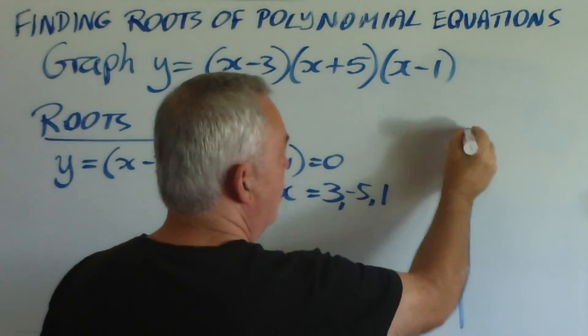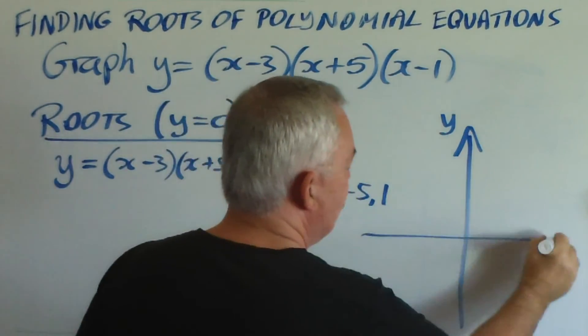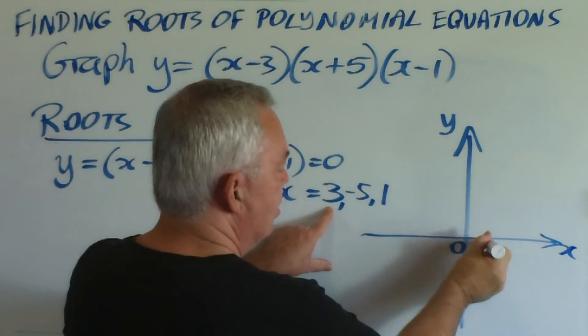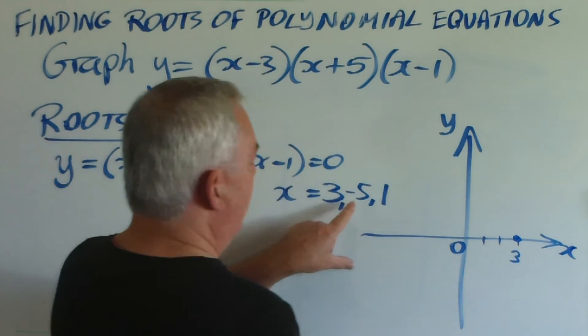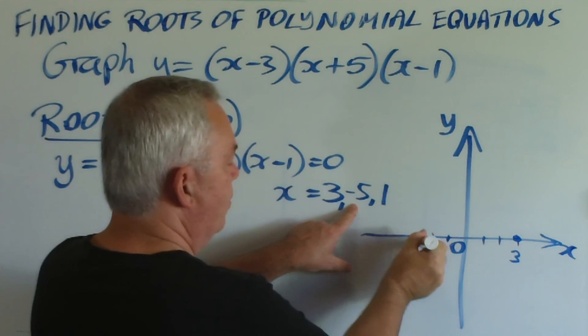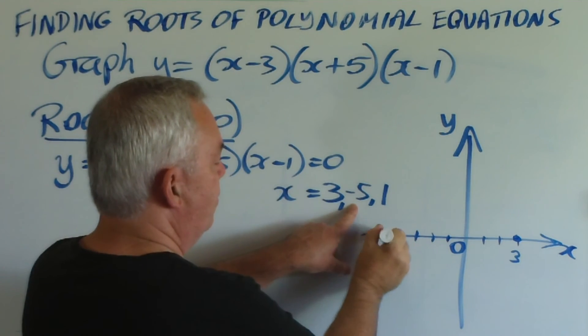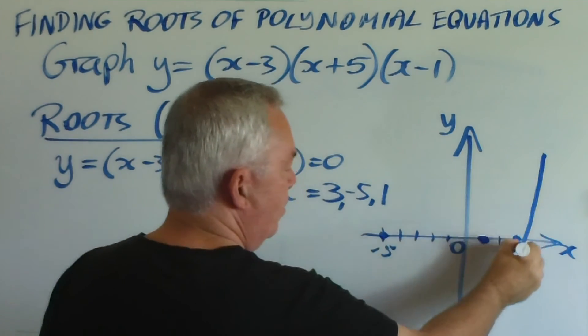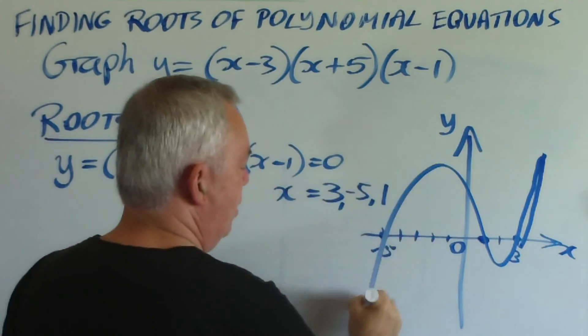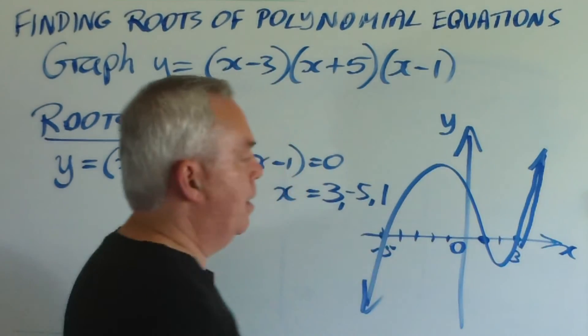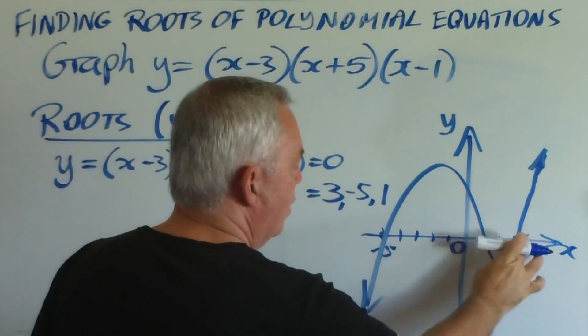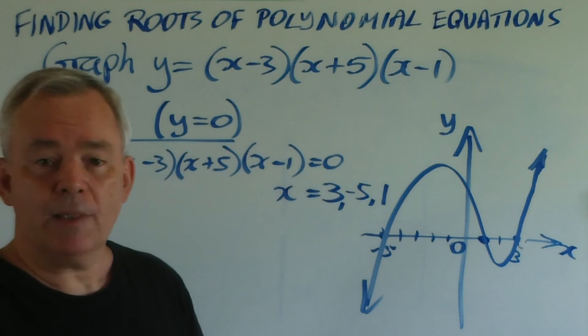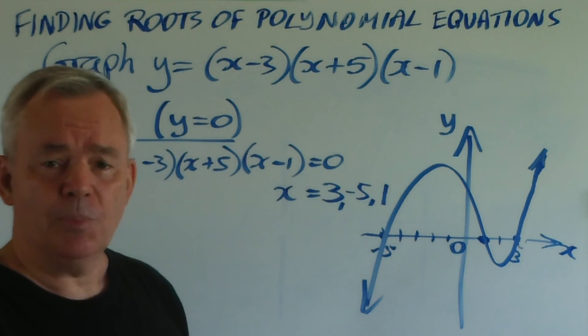And then, I'm a little cramped for space here, but I would draw a graph. I would mark on the roots at plus three, at negative five or minus five, and at plus one, and draw my graph through there, up there, and down there. And there it is, as quick and as simple as that. And I encourage you to practice the skill.